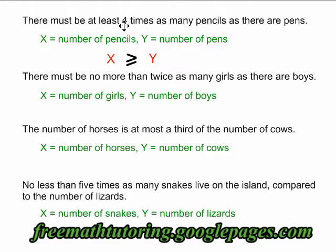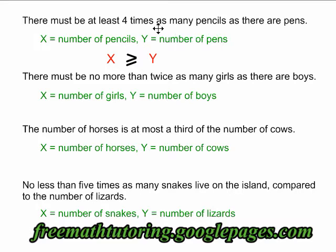Right now my equation is saying the number of pencils is greater than or equal to the number of pens. All that's left is for me to put the four in. The common mistake is that the student puts the four with the number of pencils — four times as many pencils — they put the four with the x which represents pencils. But that is a mistake. Here's how you make sure to do it right every time: you ask yourself, which number is going to be bigger? The number of pencils or the number of pens? It's easy to understand that if there are four times as many pencils as pens, the number of pencils has to be bigger. Why would you multiply the bigger number by four to get the smaller number? That doesn't make sense.